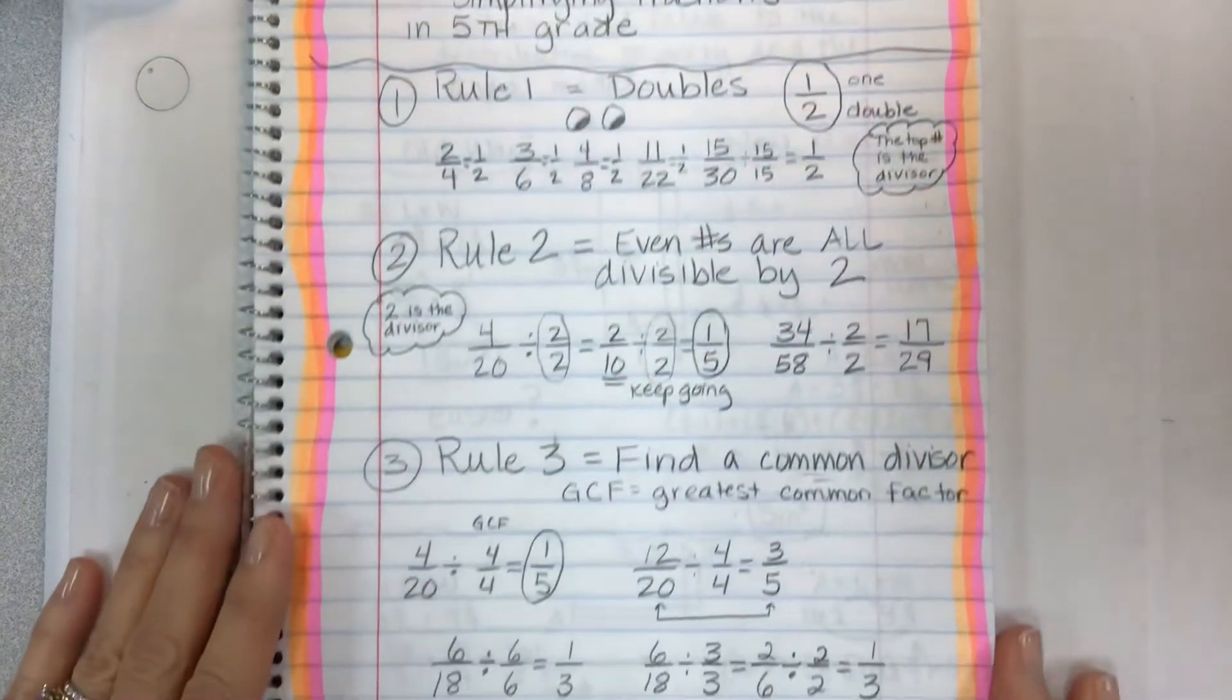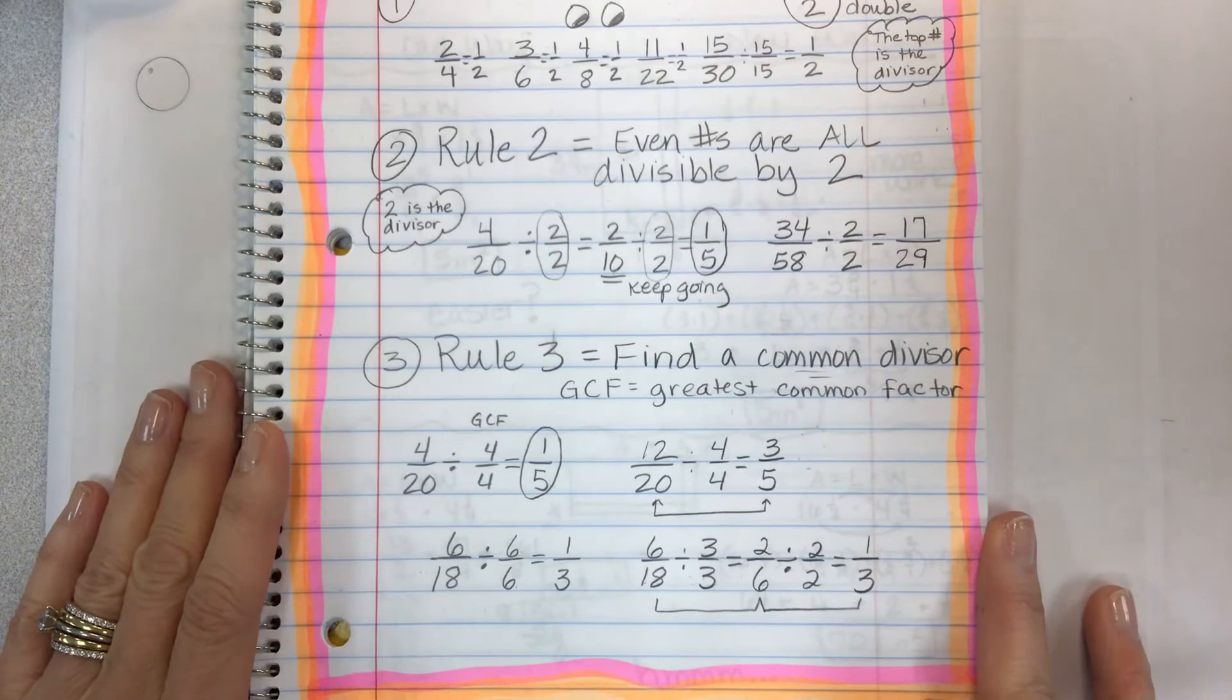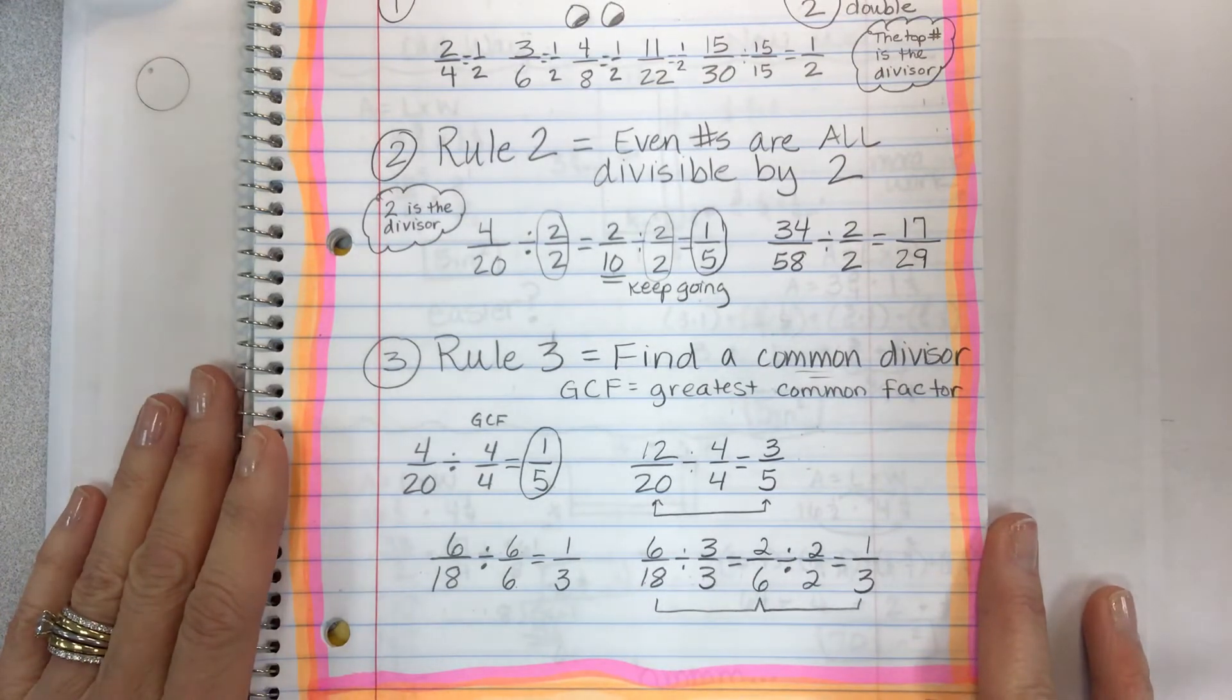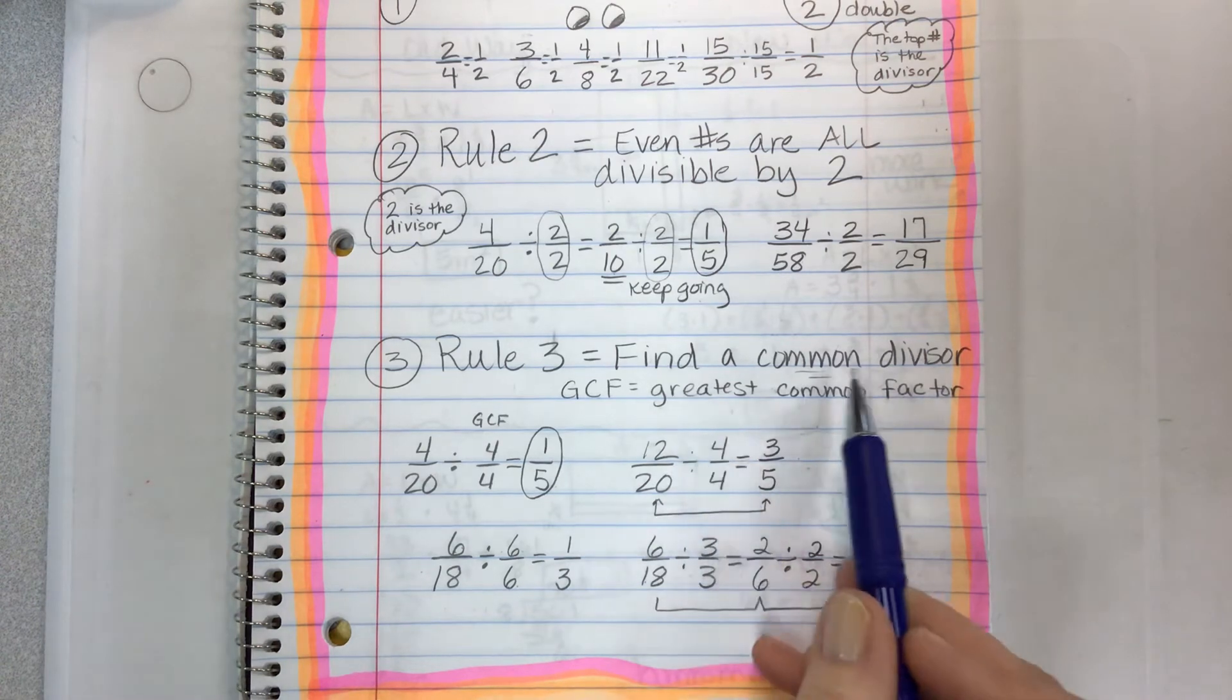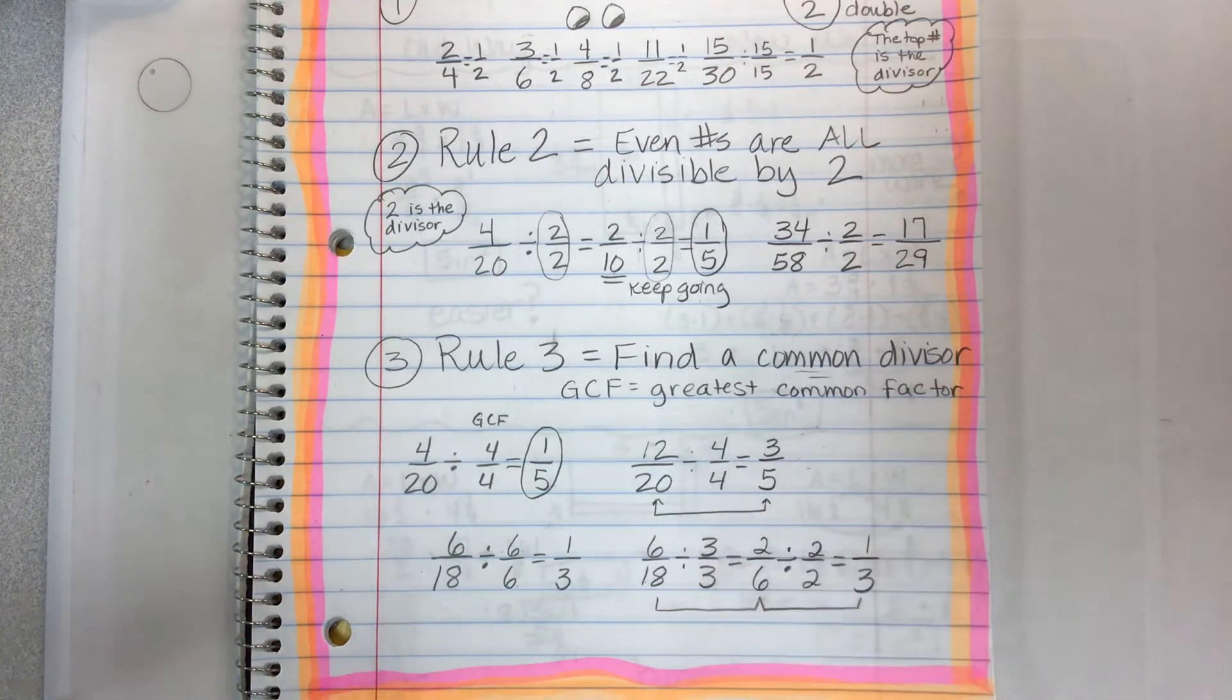The sooner you learn your math facts, the sooner you're going to get to rule three, which applies to everything. You need to find a common divisor. Finding a common divisor means knowing your facts and what would be the greatest number that would evenly divide into both.